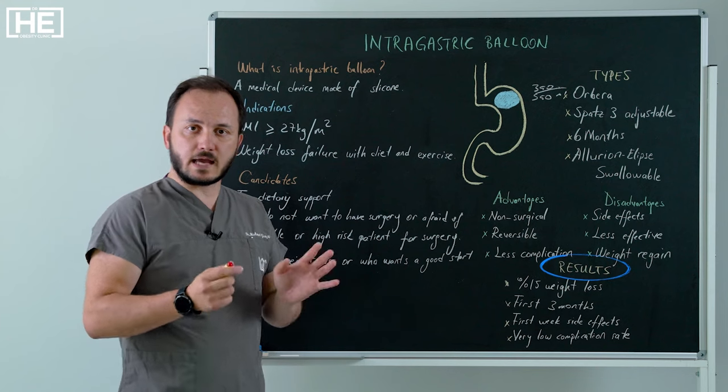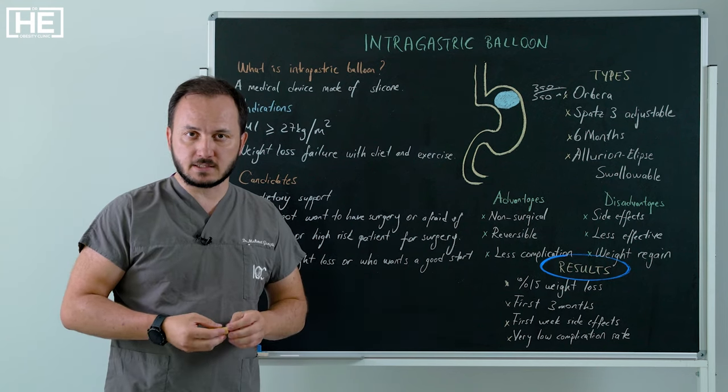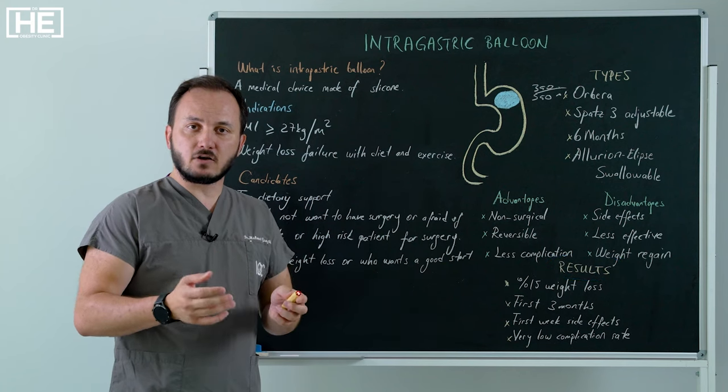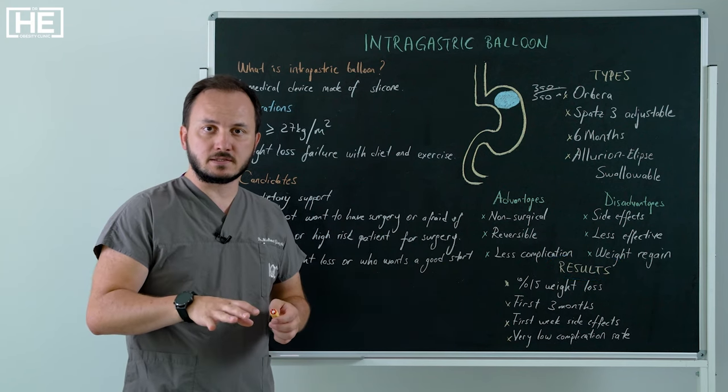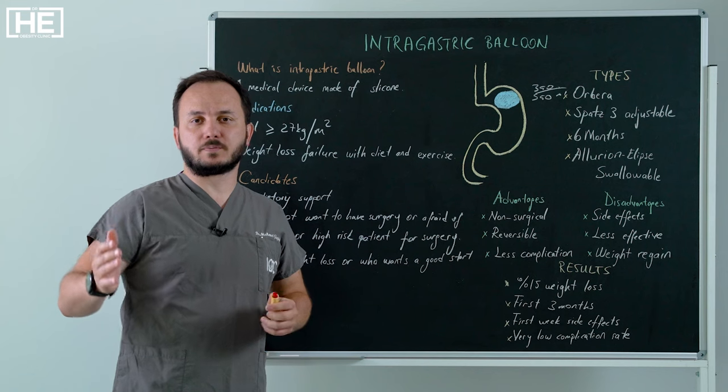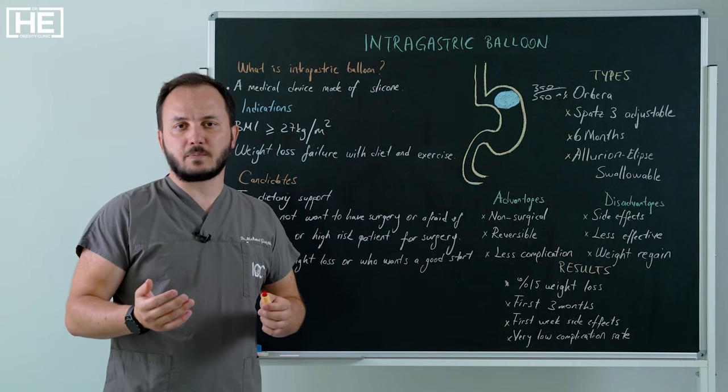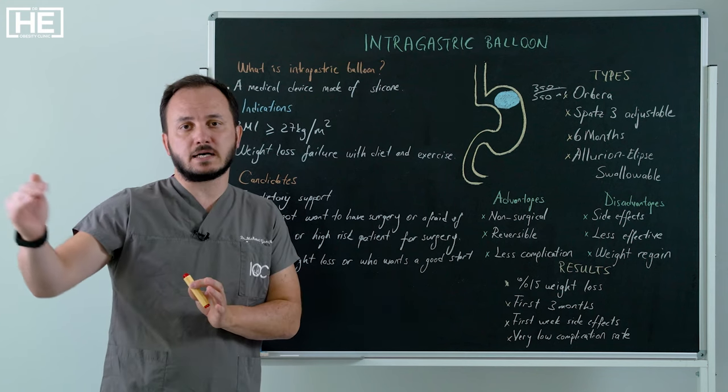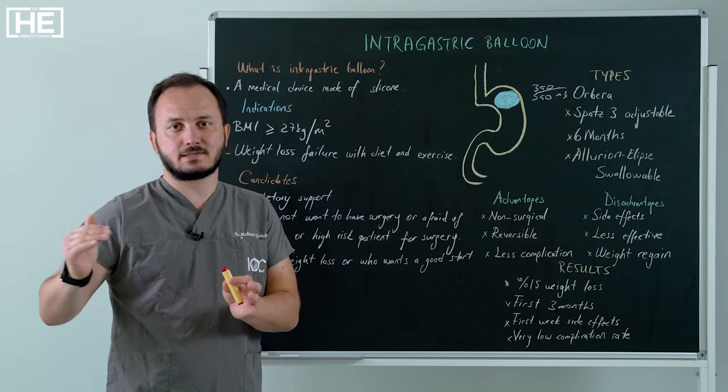What are results with intragastric balloons? Our rate is approximately 15% in six months. We see that weight loss occurs in three months and not 100%, but most of our patients suffer from side effects. First two days, but maximum seven days, 10 days.